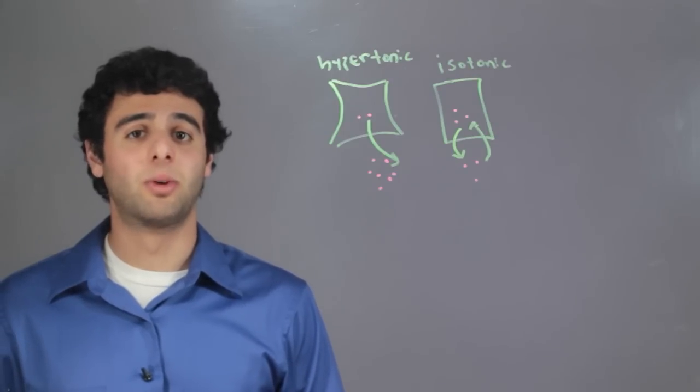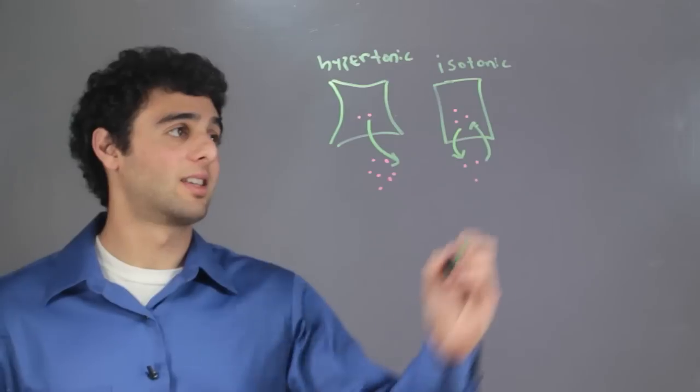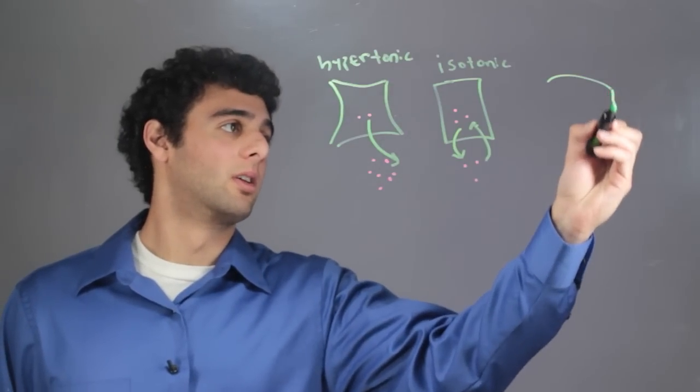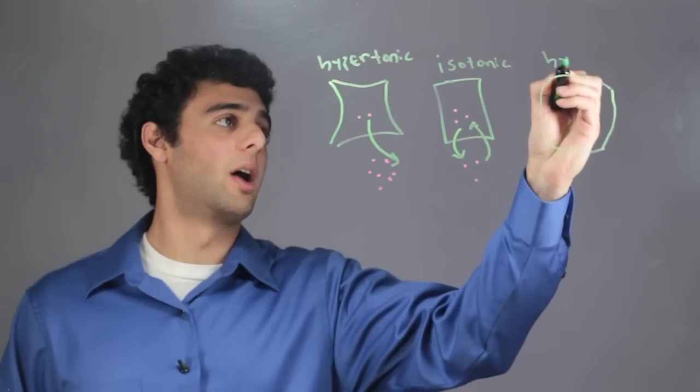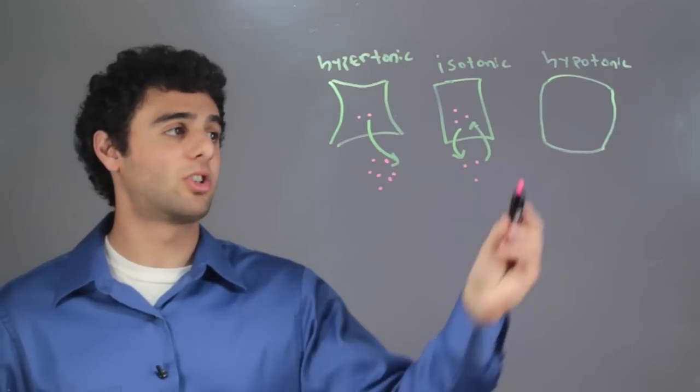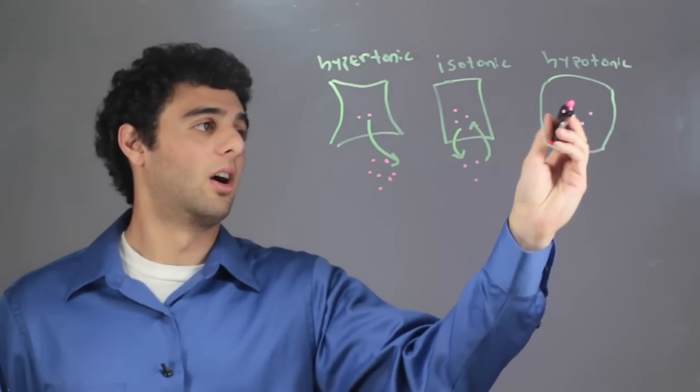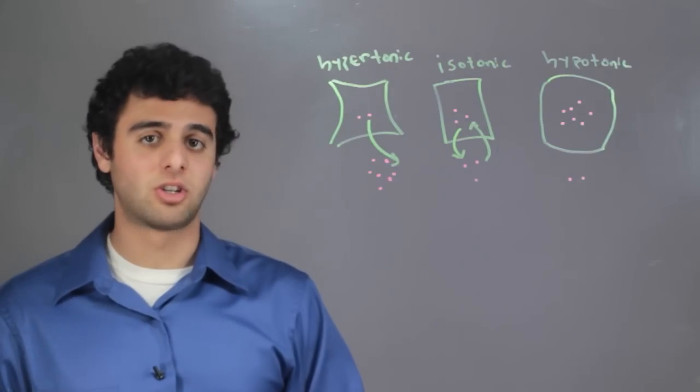In the last example, we have a hypotonic cell. This is where we have a high concentration of solute on the inside of the cell and a low concentration on the outside.